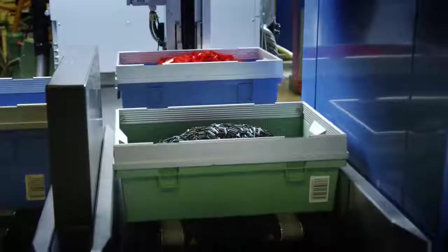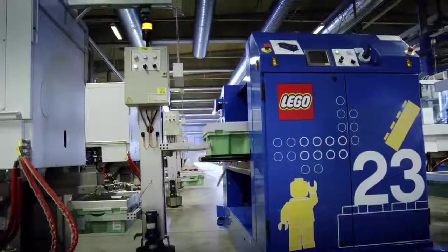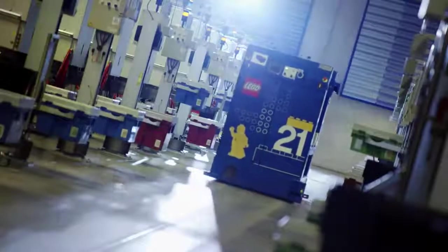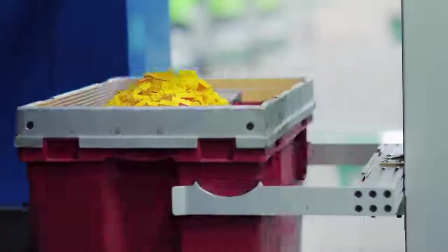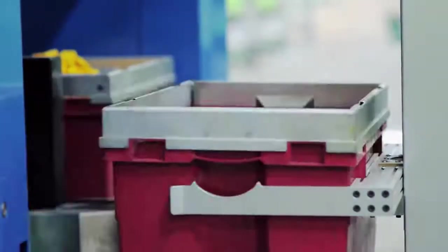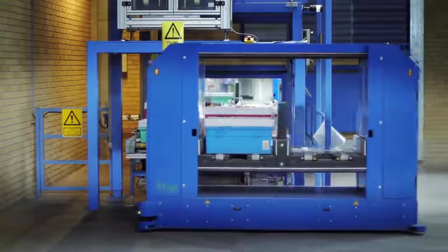A.G.V. stands for Automatic Guided Vehicle. Robots like these were introduced into the production as early as 1987. When the box by the moulding machine is full, these intelligent helpers replace it with a new empty box. The A.G.V. then takes the full boxes to the conveyor system.